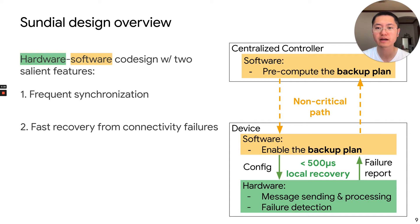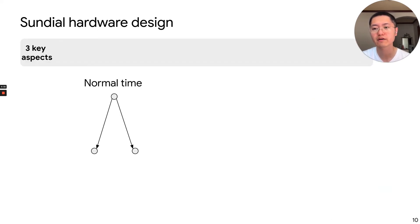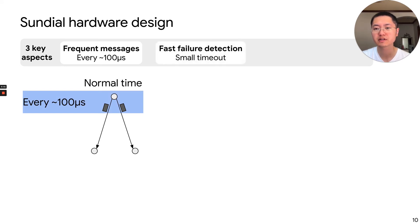So now let's look at the details of the hardware and the software. In the hardware, we have three key aspects. The first is that we send frequent messages every around 100 microseconds. And because of this, we can also detect failure very fast with a small timeout. For example, if this link goes down, then this node stops receiving messages, so it will get a timeout.